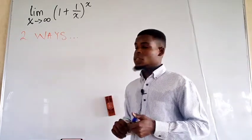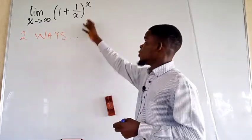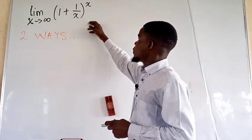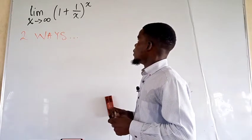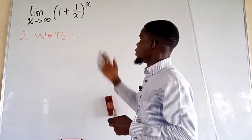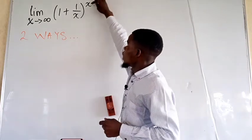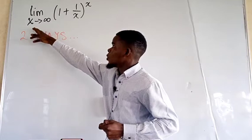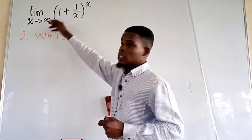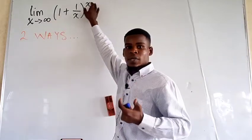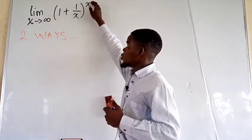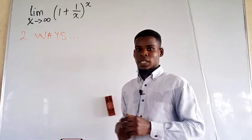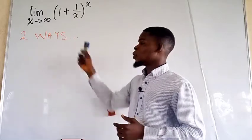We still need to be very careful here. When you have an exponent and that exponent tends to infinity, you can't just evaluate it immediately — you need to bring it down and work with it a little bit.